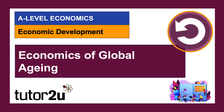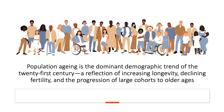In this video, we look at the economics of global ageing. Population ageing is, perhaps, the dominant demographic trend of the 21st century. The ageing process reflects increasing longevity — life expectancies going up — declining fertility, and, critically, the progression of huge cohorts of people to older ages, causing a significant change in the age structure of the world's population and that of individual countries.